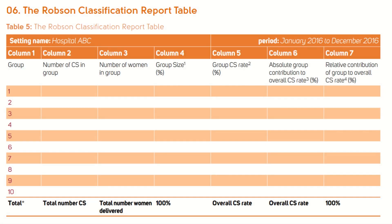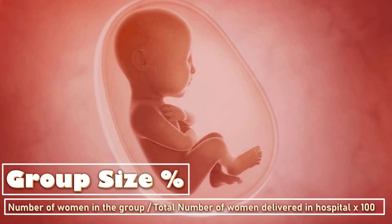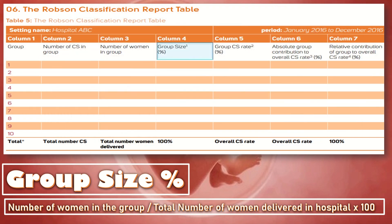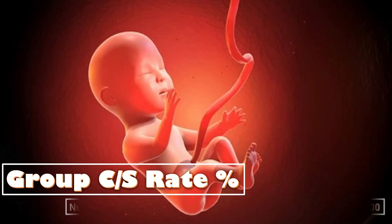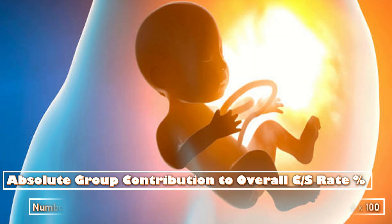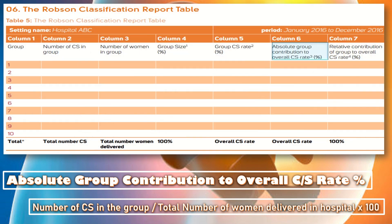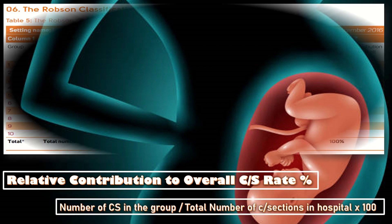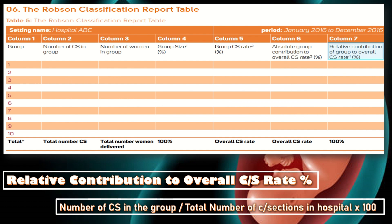In the Robson classification report table you can see all seven columns. Column four — group size percentage — is the number of women in the group divided by total number of women delivered in the hospital, multiplied by 100. Column five is the group cesarean section rate: number of cesarean sections in the group divided by total women in the group, multiplied by 100. Column six is the absolute group contribution: cesarean sections in the group divided by total women delivered in the hospital, multiplied by 100. Column seven is the relative contribution: cesarean sections in the group divided by total cesarean sections in the hospital, multiplied by 100.